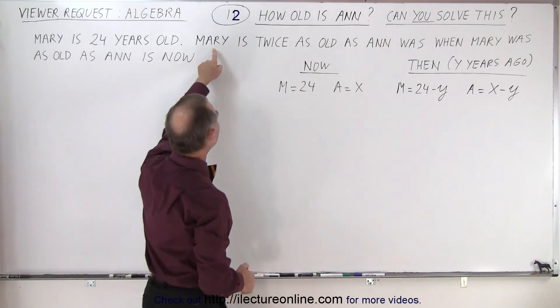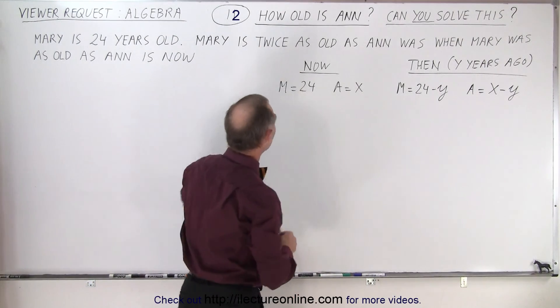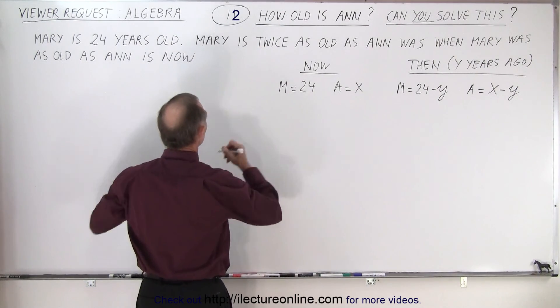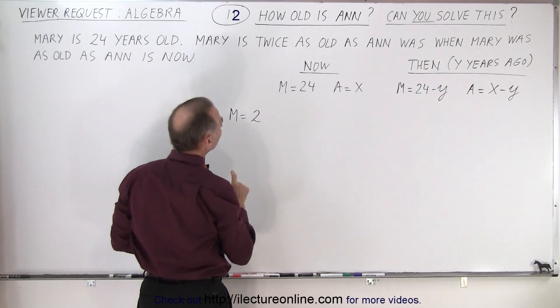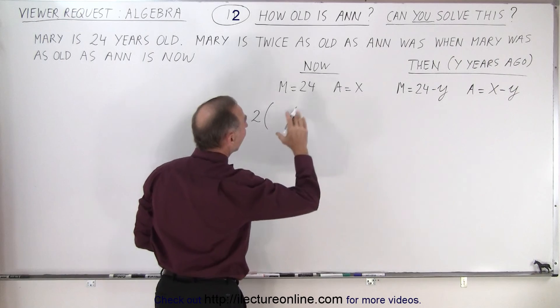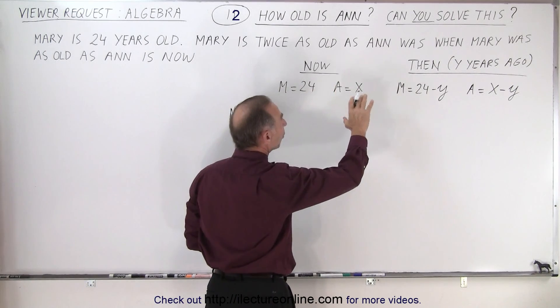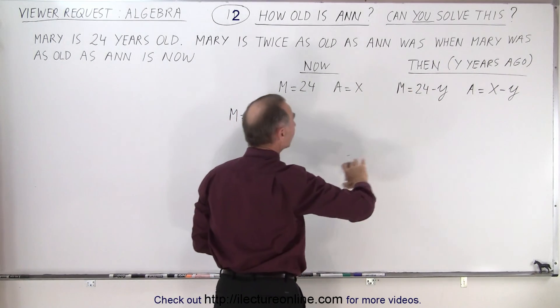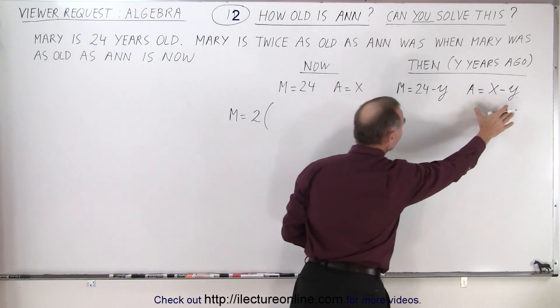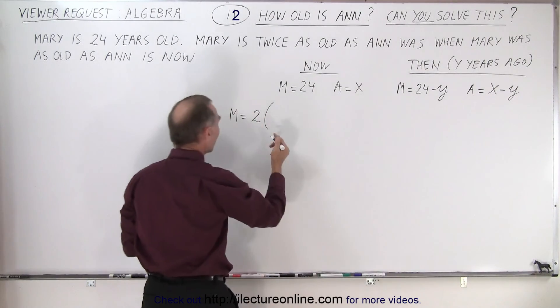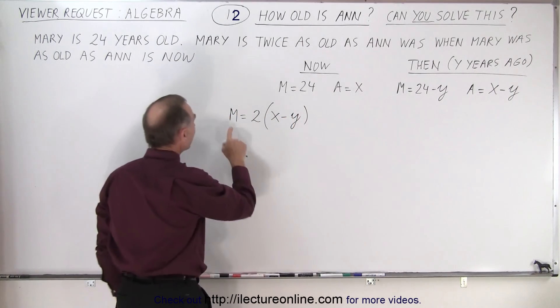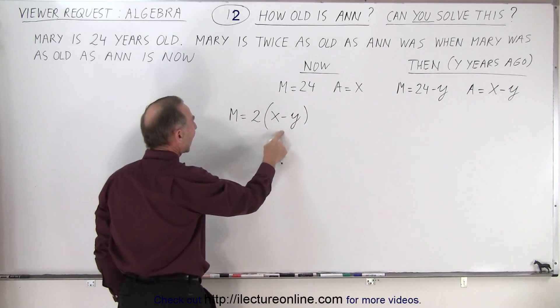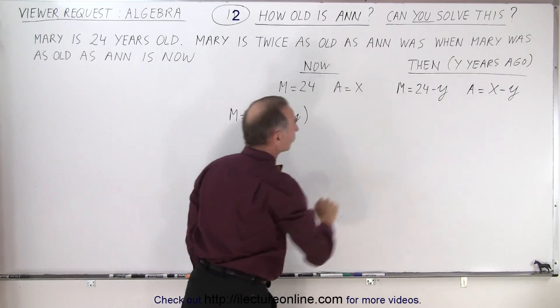And it says here that Mary is twice as old. All right, so that's now. So Mary is twice as old, so two times as Anne was. That's in the past, so twice as old as Anne was, where this is the age of Anne, so it would be twice X minus Y. So Mary is twice as old as Anne was back then Y years ago.